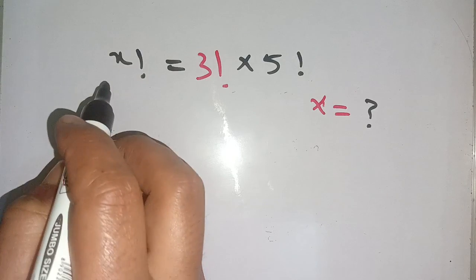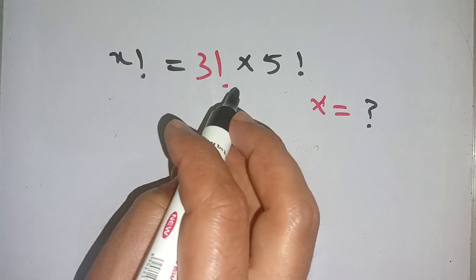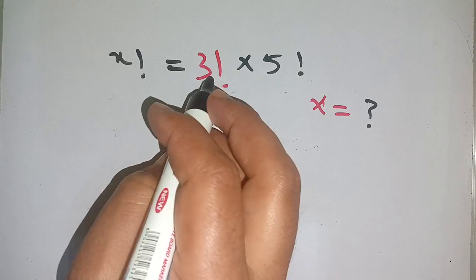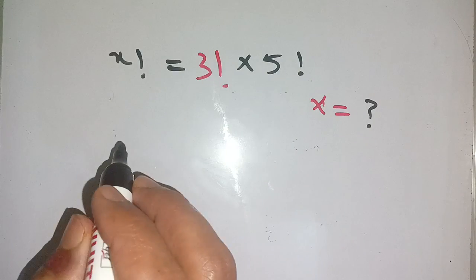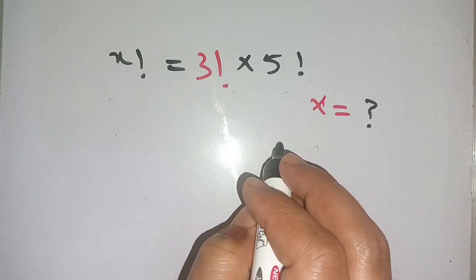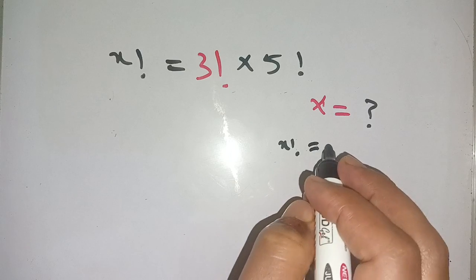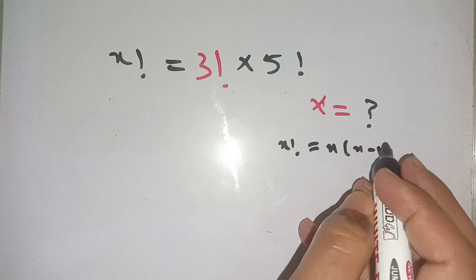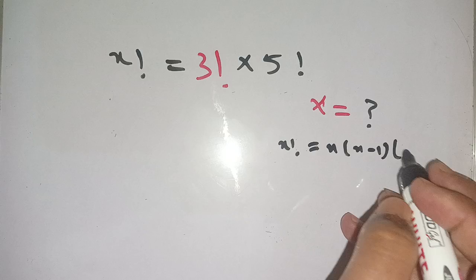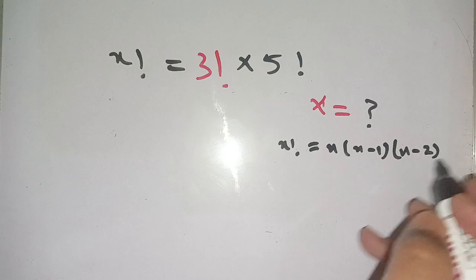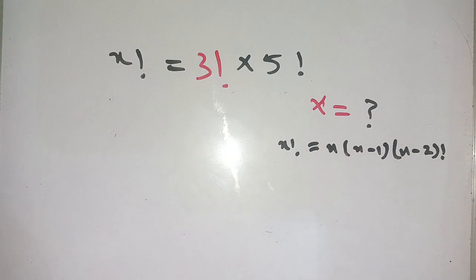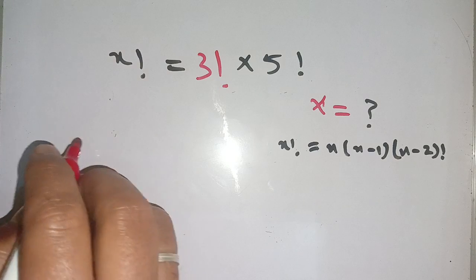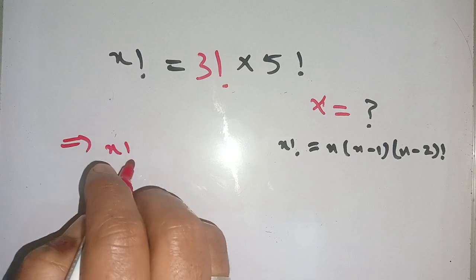Hello everyone, in today's class we are going to solve this factorial problem: x factorial is equal to 3 factorial times 5 factorial. Before solving this we know that x factorial is equal to x times x minus 1 times x minus 2 factorial. We extend it up to our required terms.